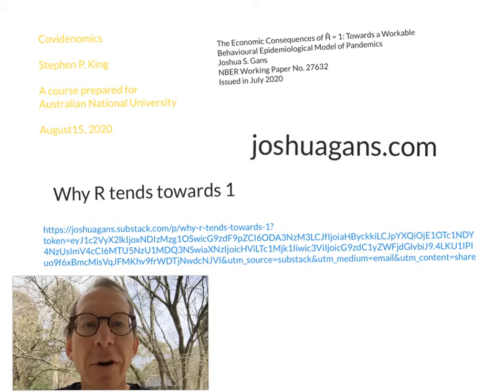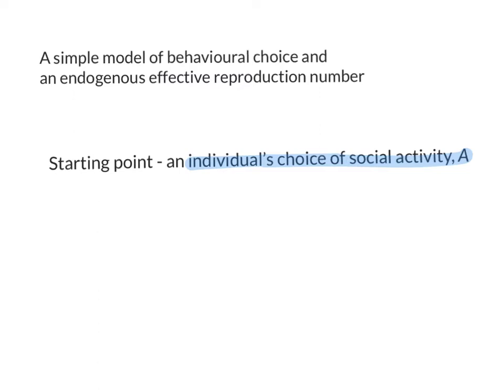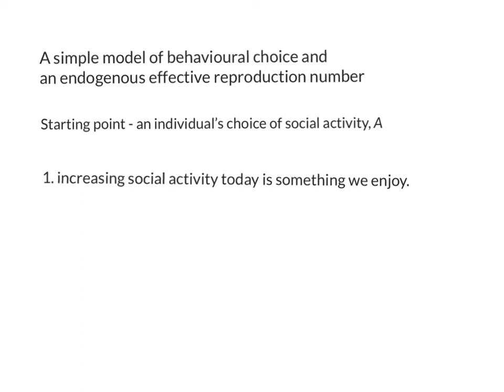In this video, we're going to start working through a simple model of behavioural choice to try and bring the economics and the epidemiology together. We're going to see that this partially but not fully explains this stylised empirical fact that the effective reproduction number tends to go to one. As our starting point, we're going to look at how an individual will choose their level of social activity — which I'll denote by capital A — in the face of a pandemic. The first part of this model is that increasing social activity today is something we enjoy.